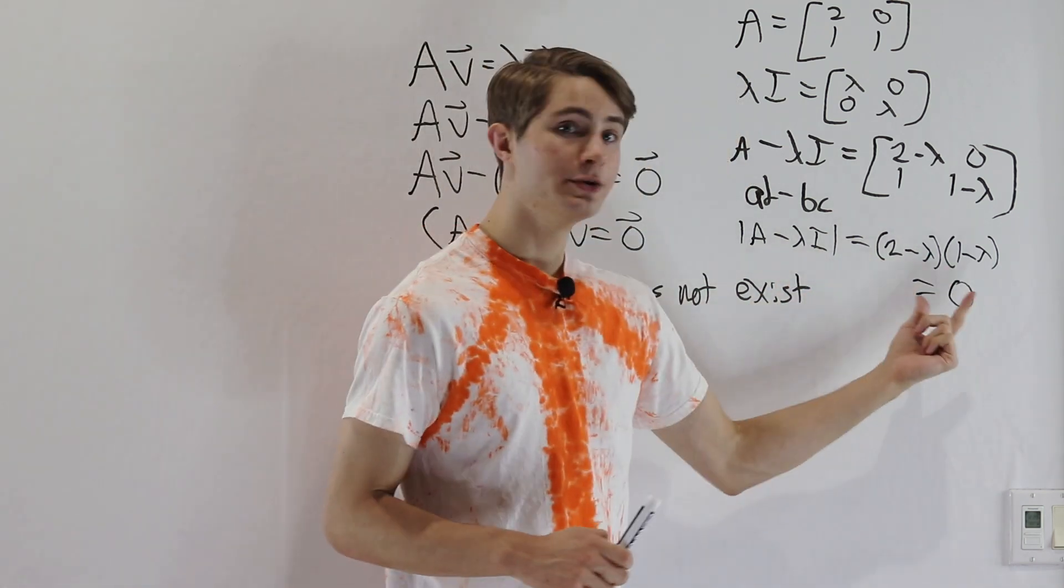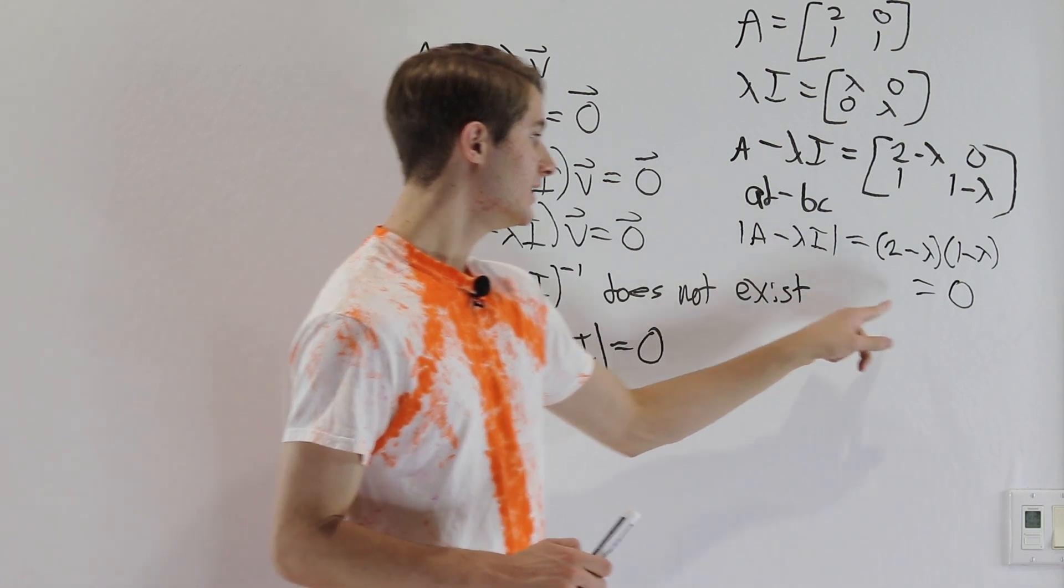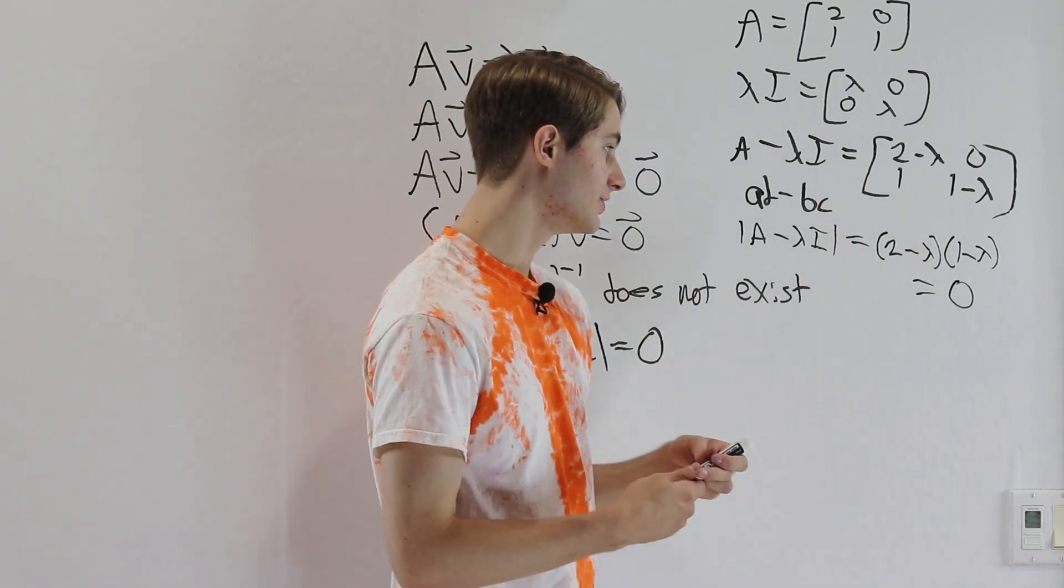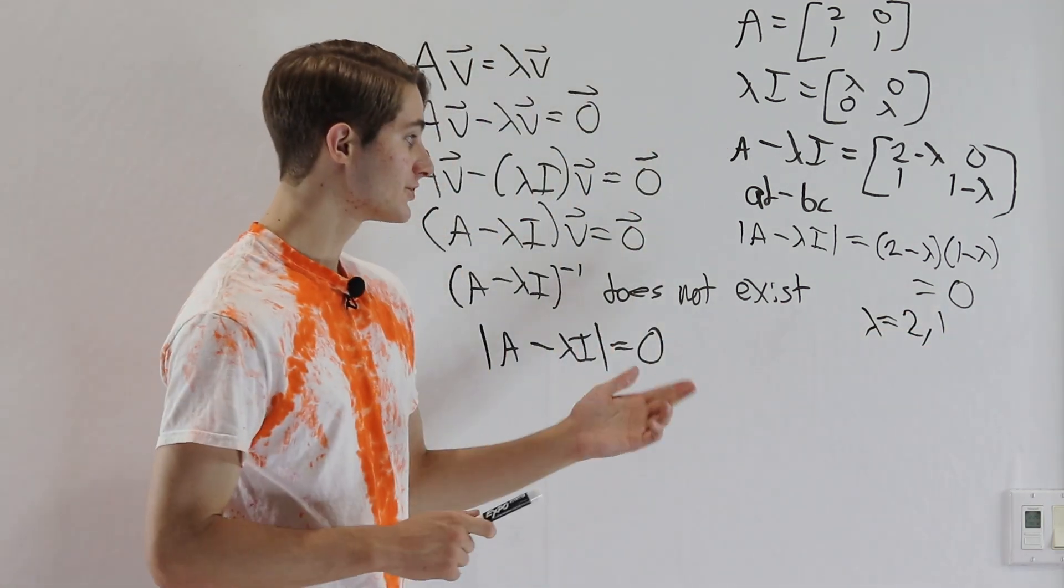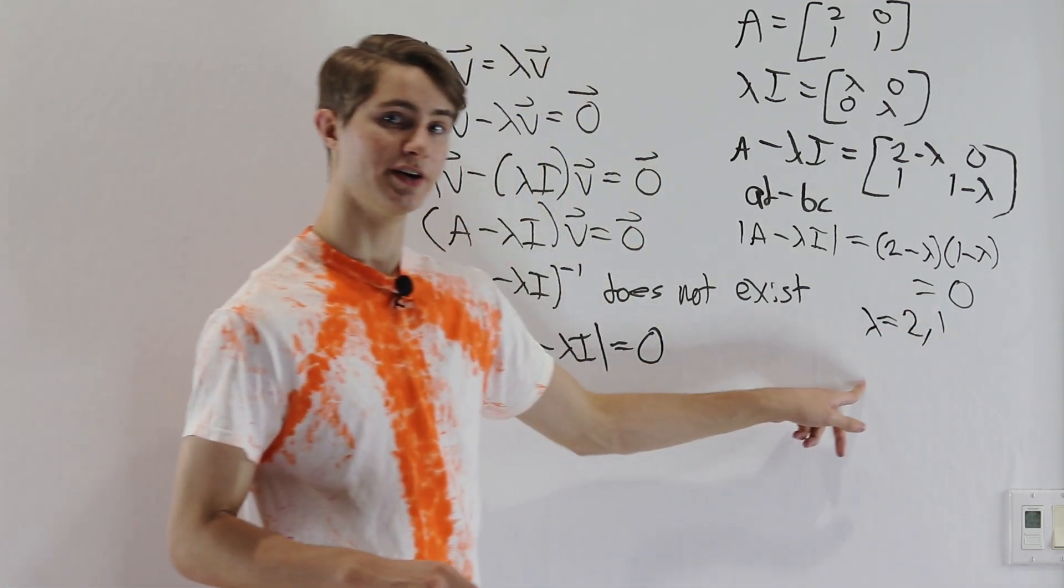This is our determinant, and we want that to equal 0. And in this case, the polynomial is already factored for us. If we want this product to equal 0, we know lambda must equal either 2 or 1. And just like that, we have found our eigenvalues.